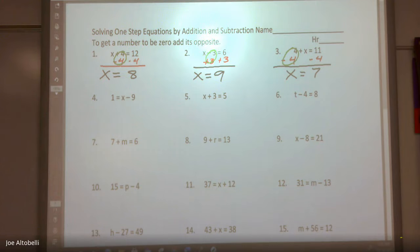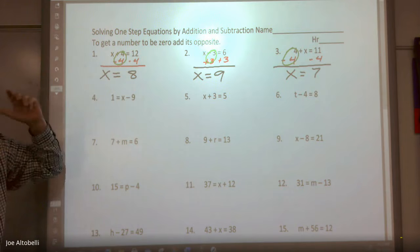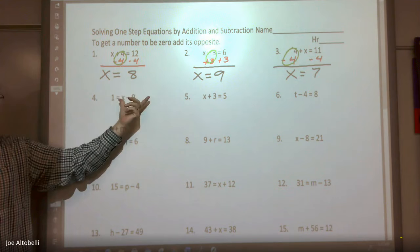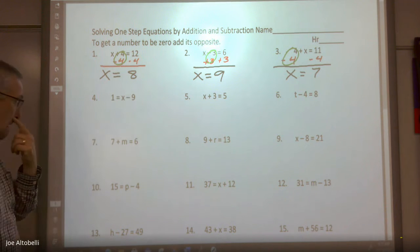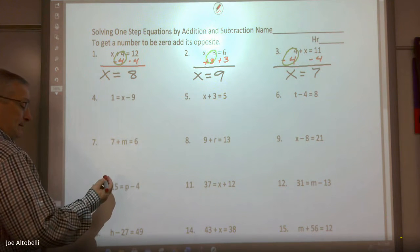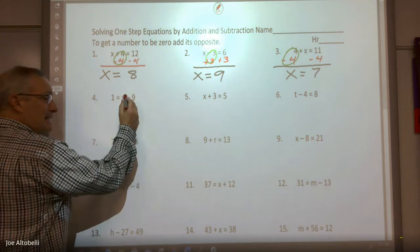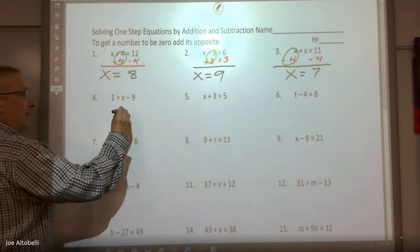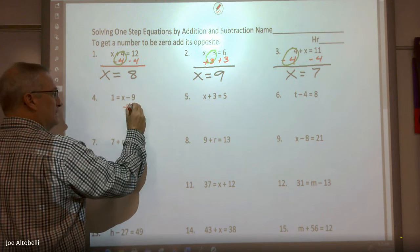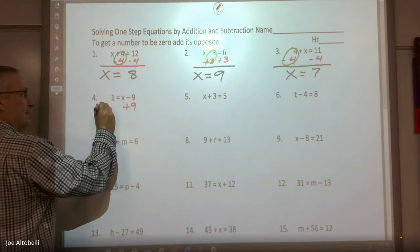Number four. Notice I have the variable on the other side, but the process is going to be the same. I find my variable and I ask myself, what do I have to add so I get just x on that side? Number four, what am I going to add to both sides? To get this -9 to be zero, I have to add a positive 9, and then add 9.